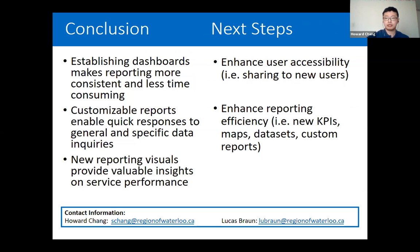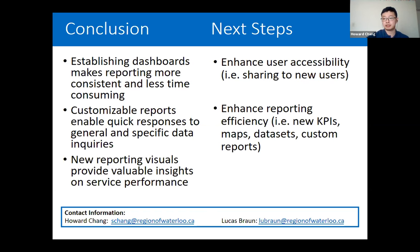This report can also be adjusted with scaled-back crowding standards, and we used it during the pandemic to identify underused trips and make service reductions. In conclusion, we significantly improved our passenger data reporting efficiency by creating new dashboards, which makes reporting more consistent and less time-consuming. We created custom reports that help us respond to specific data inquiries, and we have new reporting visuals providing valuable insights on service performance. Next steps include enhancing user accessibility, adding new KPIs, maps, datasets, and custom reports.